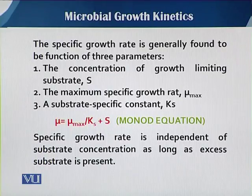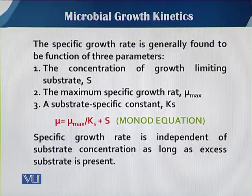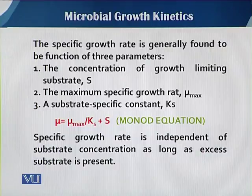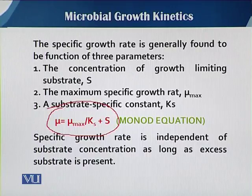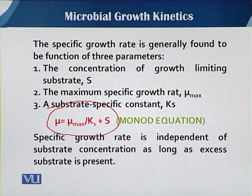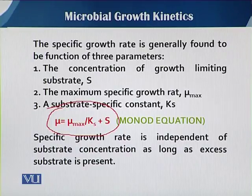The specific growth rate is generally found to be a function of three parameters: first, the concentration of the growth-limiting substrate — when it becomes limiting, growth is retarded; second, the maximum growth rate, mu max; and third, the substrate-specific constant Ks. The Monod equation provides a good explanation of the effect of substrate on the specific growth rate of any unicellular microorganism, where Ks and mu max are known as Monod parameters. Mu max is the maximum growth rate constant and Ks is the substrate utilization constant.